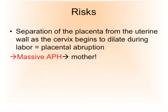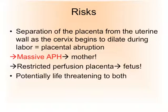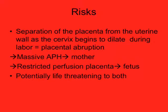What are the risks of placenta previa? The placenta might separate from the uterine wall as the cervix begins to dilate during labour — hence a partial or complete abruption. The result could be massive PPH, with consequences of hypovolemia, hypovolemic shock, and even life-threatening hemorrhage for the mother. There is also restricted perfusion through the placenta, which will jeopardize the fetal circulation and well-being. So this condition can be completely asymptomatic but all of a sudden change into a potentially life-threatening situation for both the mother and her child.